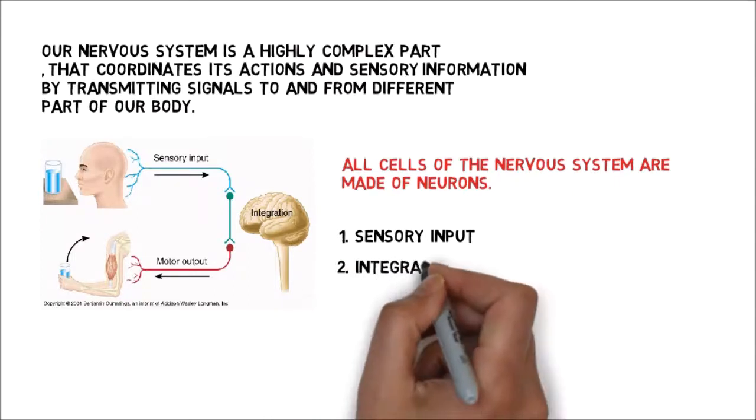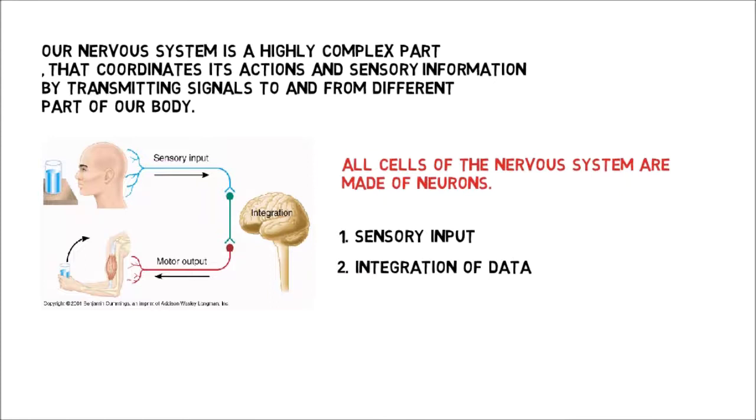Number two: integration of data. When nerves conduct impulses from sensory receptors to the brain and spinal cord, the information or data that is received is processed by the way of integration of data, which occurs only in the brain. This process acts as a messenger that relays signals between motor and sensory neurons.